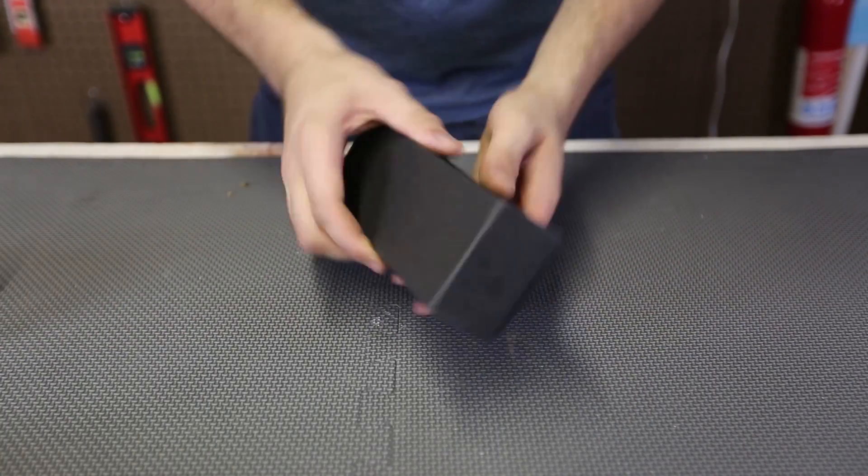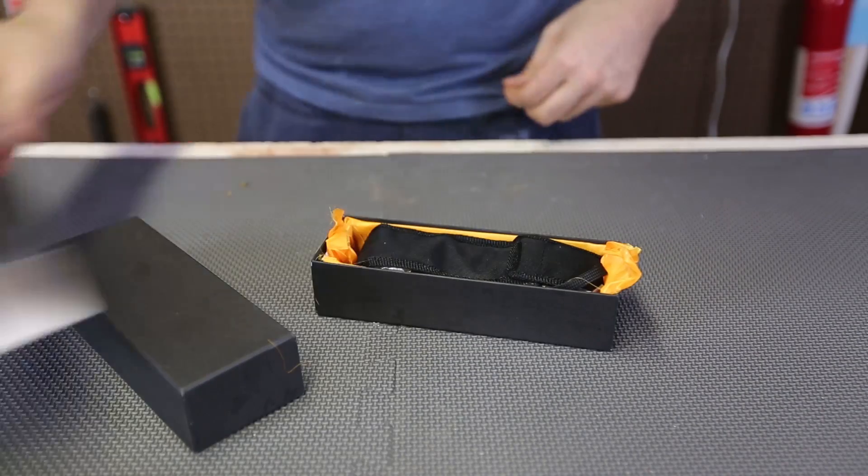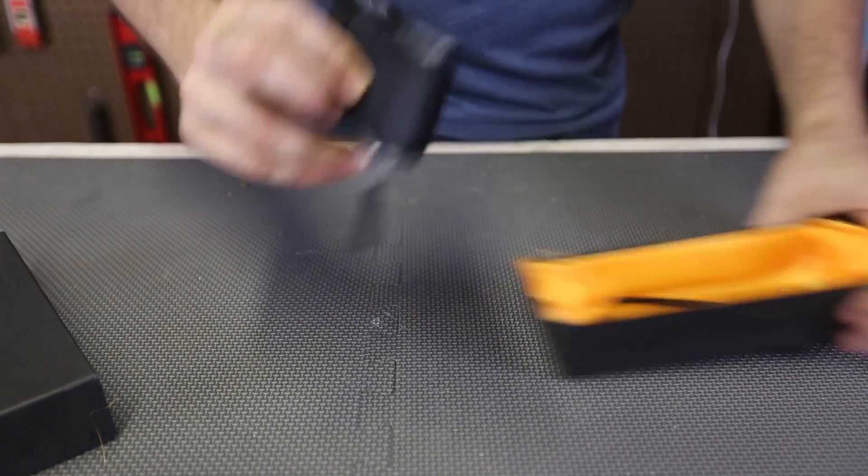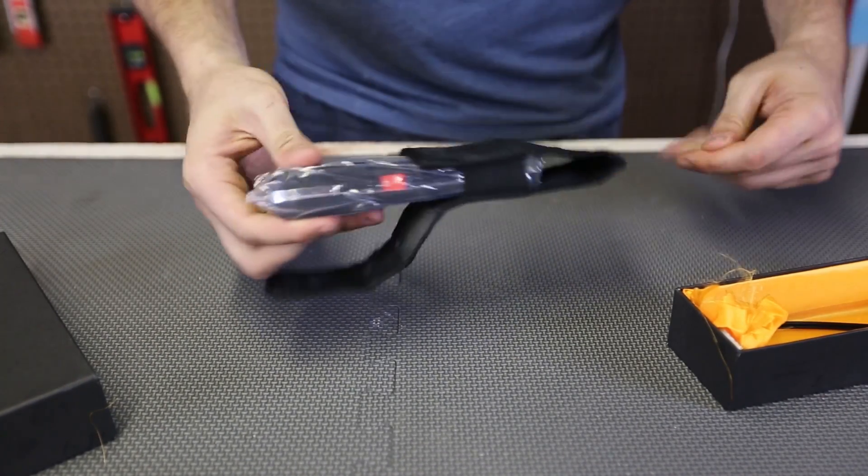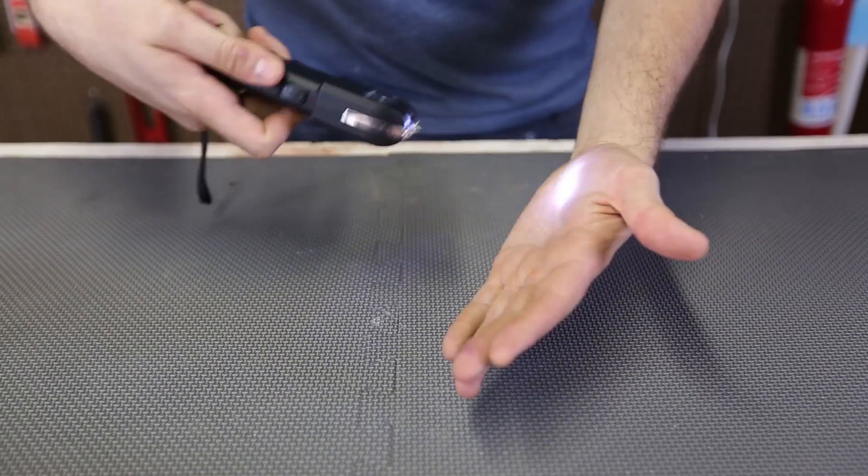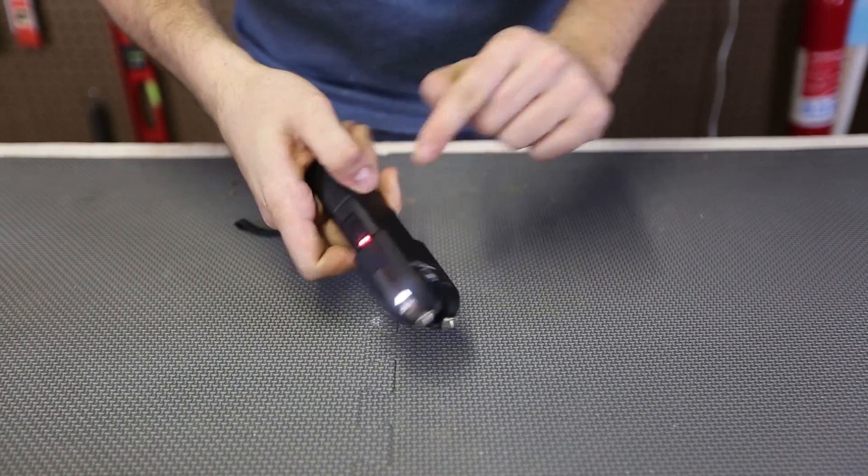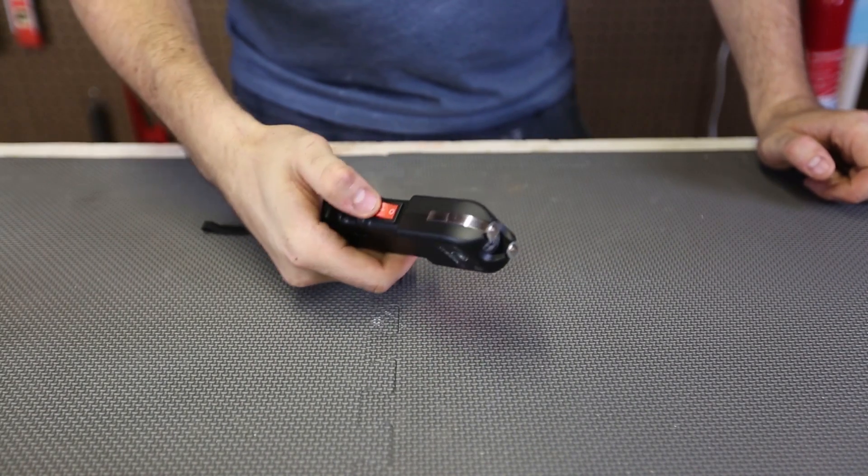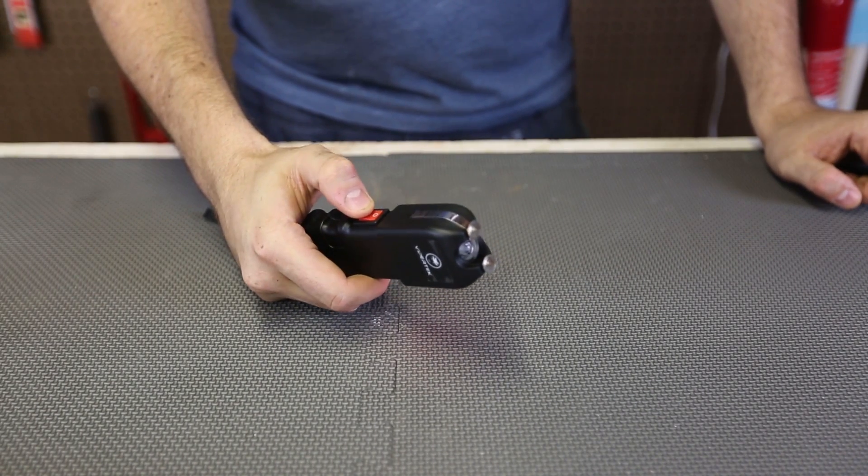So I got this taser right here, Viper Tech. Let's open it up and we'll see what it's all about. Okay, looks like right here is a flashlight, pretty small flashlight, and then this right here is red. All I have to do is press this and it will tase.